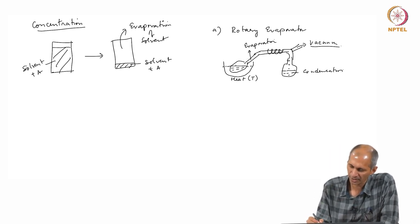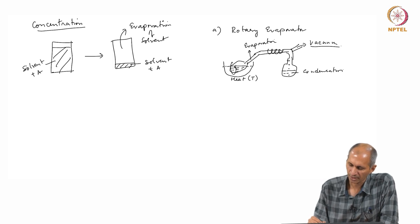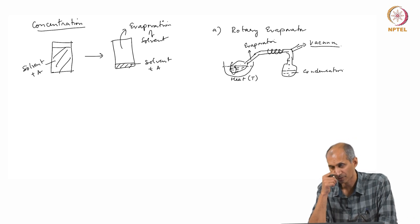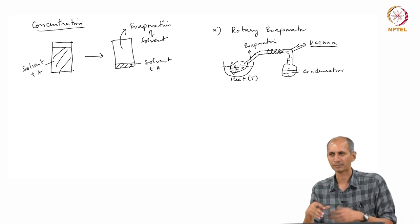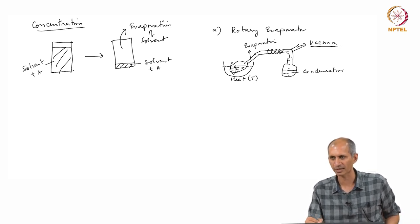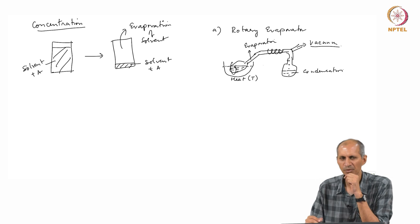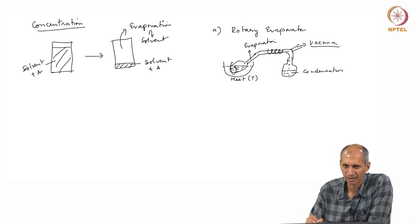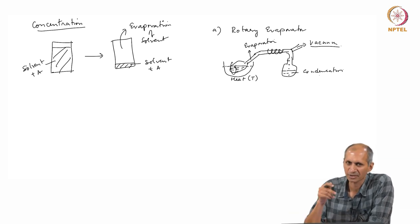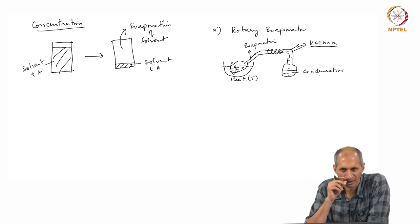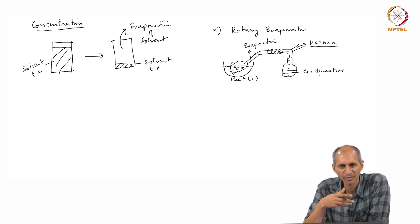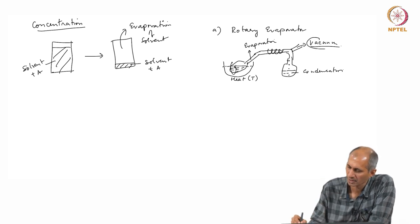It is called a rotary evaporator because the flask is rotated, so the level keeps coming down. Beyond a certain volume — say from 100 ml you can reduce to about 5 ml — you cannot reduce further. In environmental sciences we use it for concentration, and an advantage is you can recover the solvent. This is like distillation, separating on the basis of volatility, influenced by different vacuum levels applied.